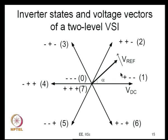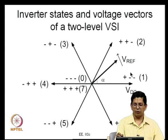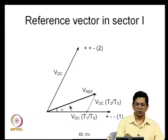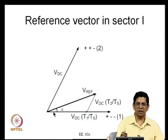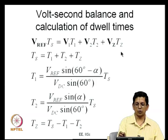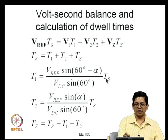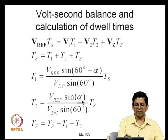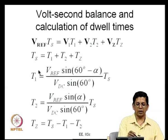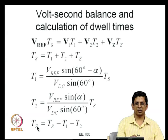In the space vector plane, there is a revolving reference vector sampled every sub-cycle. If the sample falls in sector 1, active vector 1, active vector 2, and the null vector are used to produce the average reference vector, applied for times T1, T2, and Tz respectively. The dwell times are: T1 = Vref·sin(60°−α)·Ts / (Vdc·sin60°), T2 = Vref·sin(α)·Ts / (Vdc·sin60°), and Tz = Ts − T1 − T2.